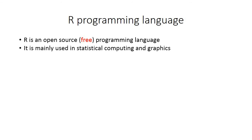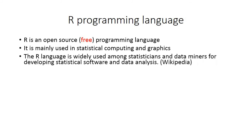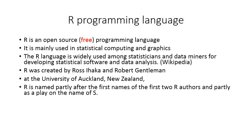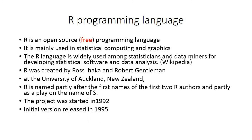R is widely used among statisticians and data miners for developing statistical software and data analysis. R was first created by two scientists: Ross Ihaka and Robert Gentleman, at the University of Auckland, New Zealand. R is named partly after the first names of its two authors — R from Ross and R from Robert — and partly as a play on the name of another language called S. The R project was started in 1992, initial versions released around 1993 to 1995, and the stable version was released in 2000.